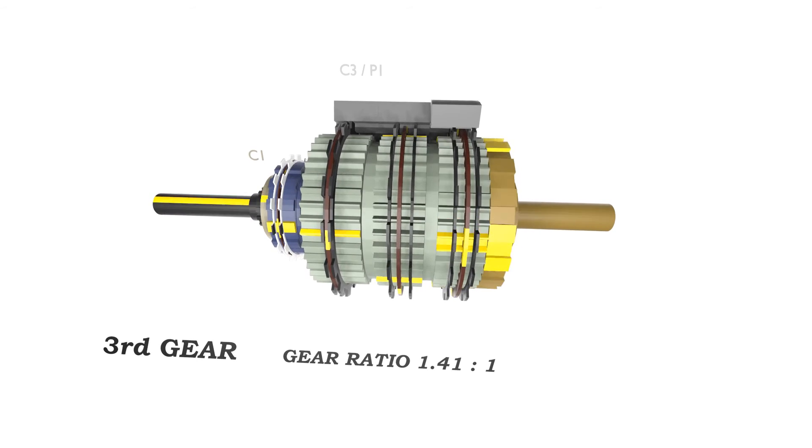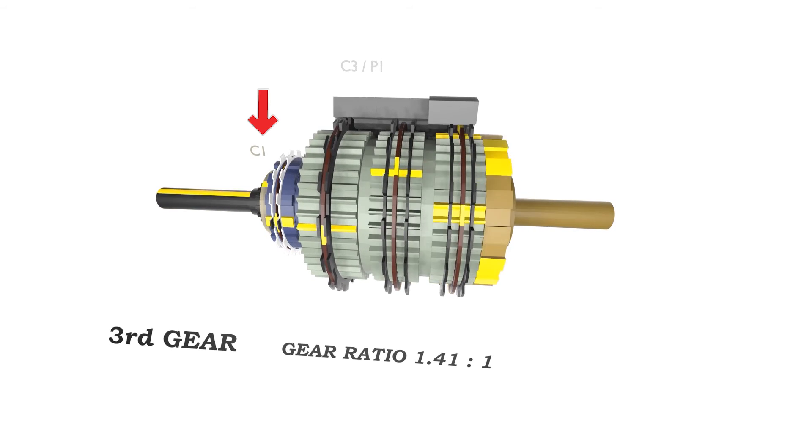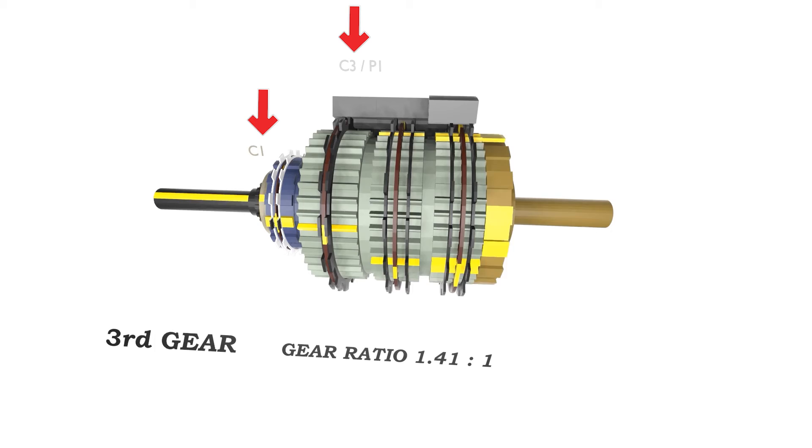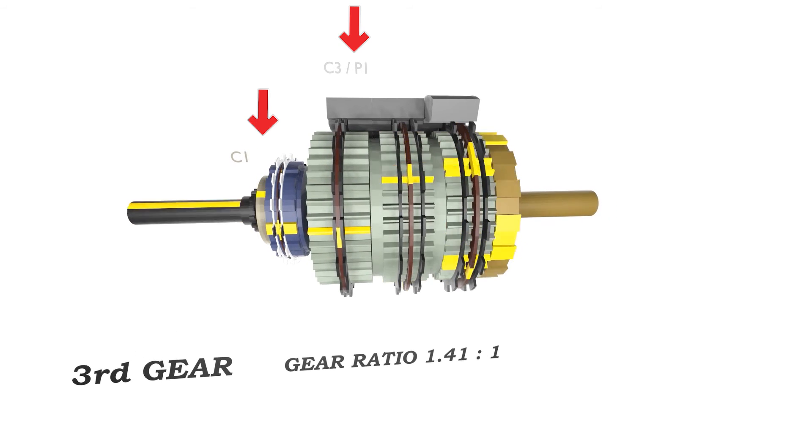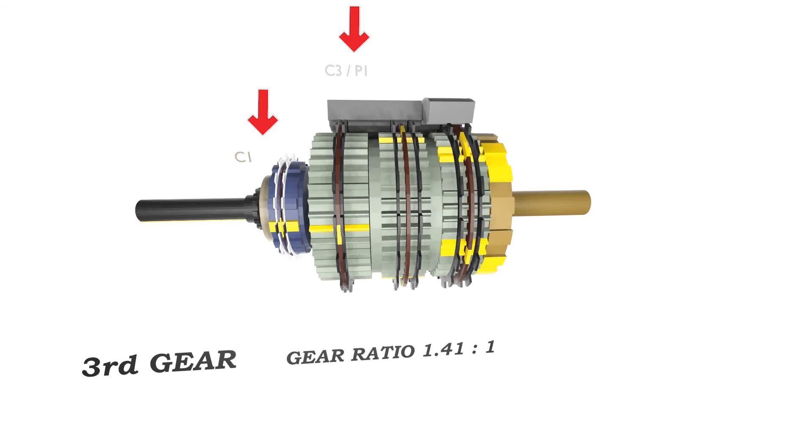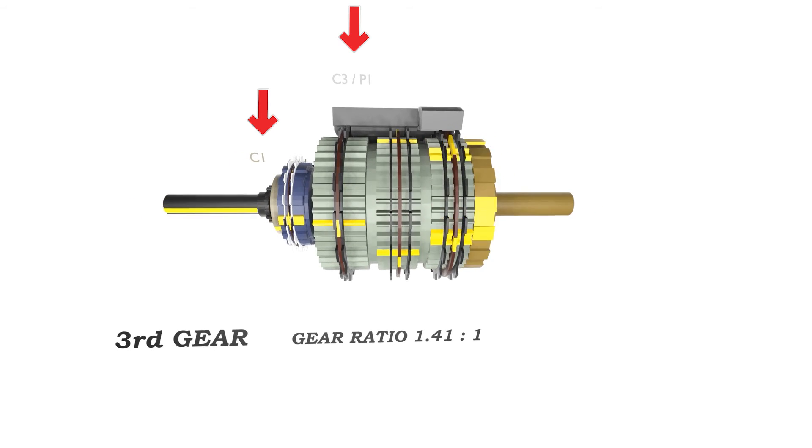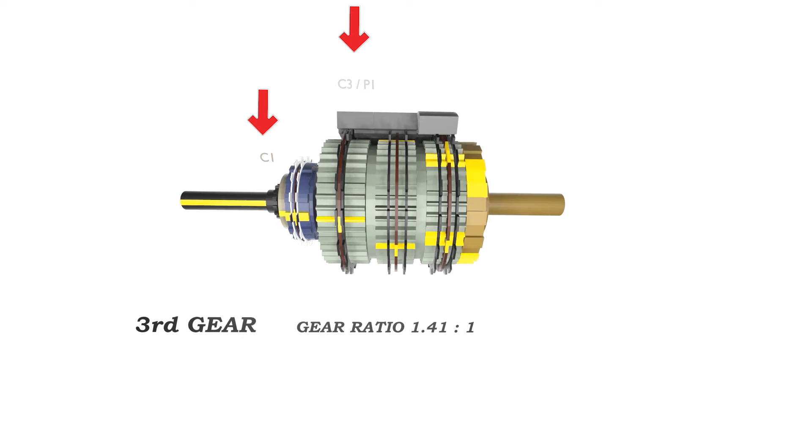Third gear. We need to engage C1 and C3. We disengage the clutch packs from C4 and now engage the C3 planetary 1 system. C1 still remains engaged.